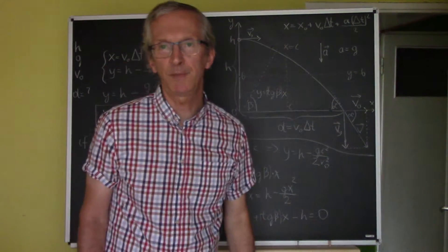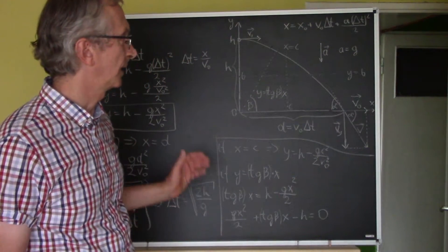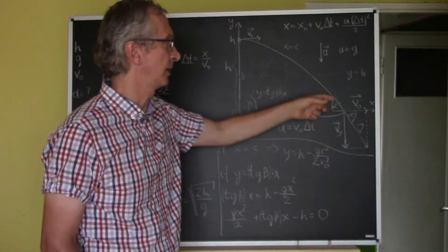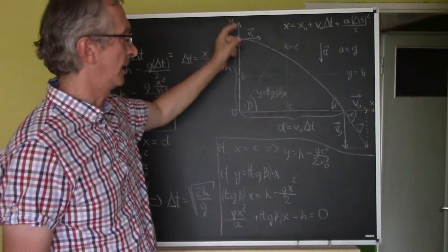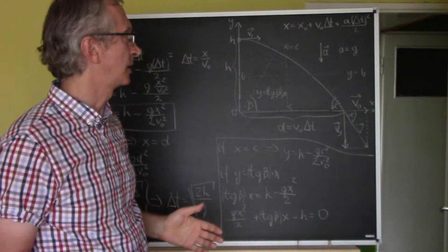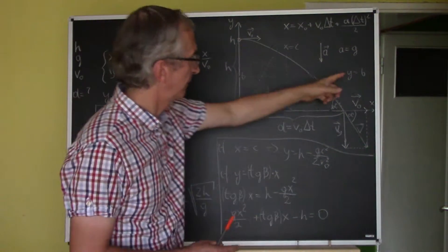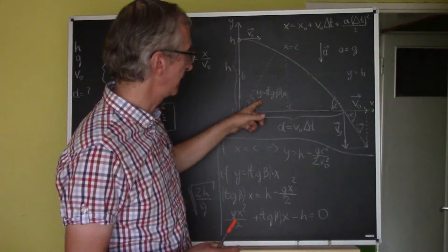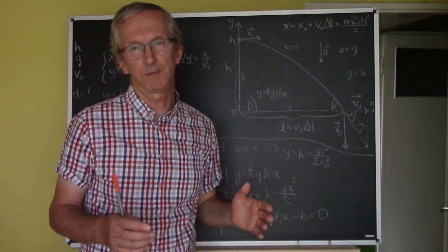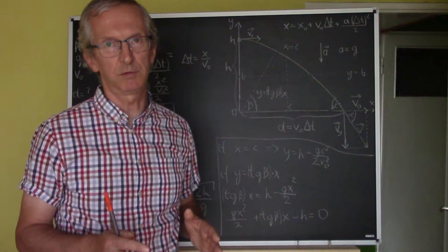The method is simple. We want to write the equation of the path of the thrown body in the coordinate system Y, X, and we will write the equation describing the obstacle — the platform, wall, or slope. Then we'll find the place of intersection of these two lines.